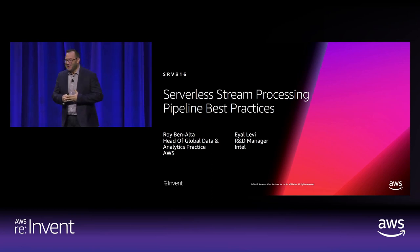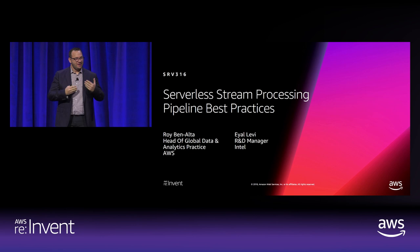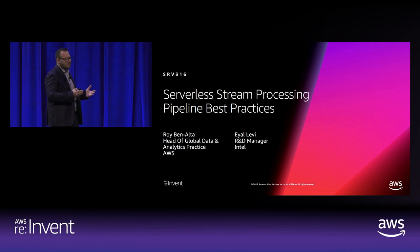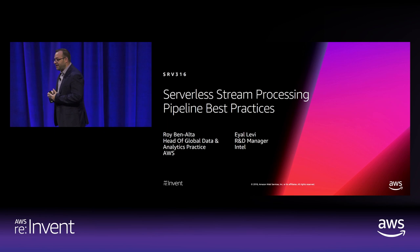My name is Roy Benalta. I'm from New York. Originally I'm from Israel — that's where the accent is from. I've been with Amazon Web Services for five-plus years. I've had several roles within AWS, from solution architect to business development, and today I'm leading our global data and analytics practice.